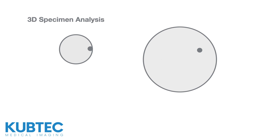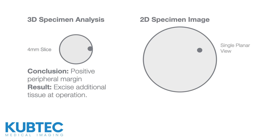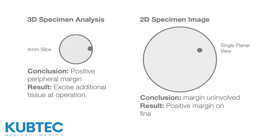Using 3D tomosynthesis, the surgeon would conclude that there is a positive peripheral margin on slice 4, and can therefore excise additional tissue at that precise location during the operation. Using traditional 2D imaging, the surgeon would conclude that there is no margin involvement, resulting in a positive margin on final pathology — and as a consequence, the patient would be scheduled for re-excision.